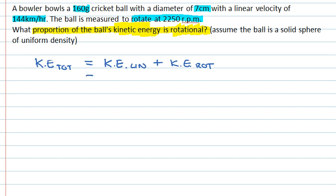The expression for the kinetic energy from the linear motion is given by half times the mass of the object times the velocity squared. And the kinetic energy from the rotational component is given by a half times I, which is the moment of inertia of the object, times the angular velocity squared.